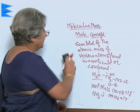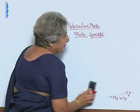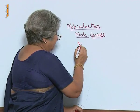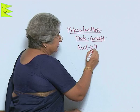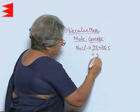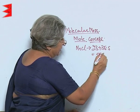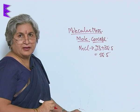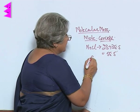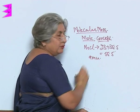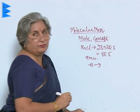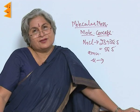In the case of sodium chloride: sodium is 23 and chlorine is 35.5, so the molecular mass is 58.5. The unit by which we express molecular mass was first amu, then 'mo', and now IUPAC has changed it to 'mu'.